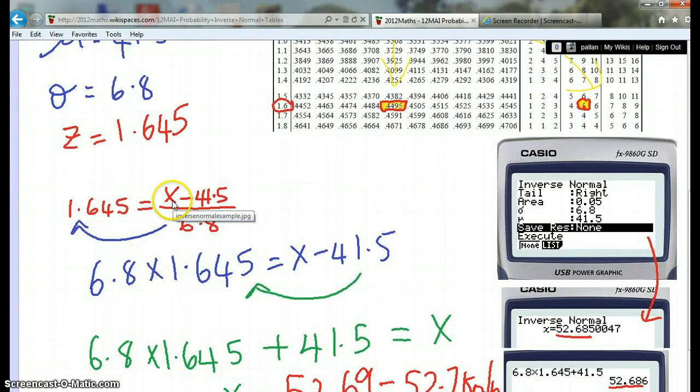Now we've got one unknown, the X, and we solve for X. We get 6.8 and multiply it because it's divided on that side, so multiply it on the other side. Then we've got minus 41.5 on this side becomes plus 41.5 on the other.